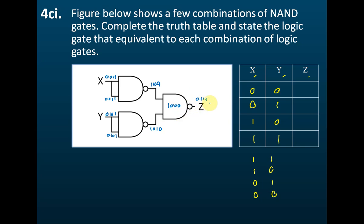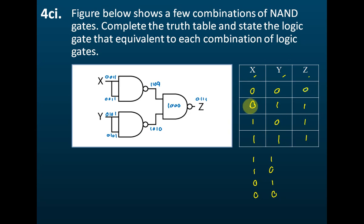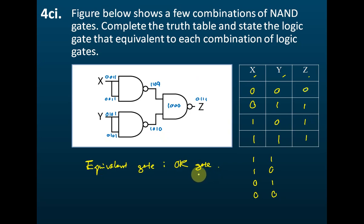So that is the output Z. The output is 0, 1, 1, 1. And from the truth table we can see that this is equivalent to an OR gate — 0 AND 0 gives 0; 0 AND 1 gives 1; 1 AND 0 gives 1; 1 AND 1 gives 1. This is the truth table for the OR gate. So the equivalent gate for this combination is the OR gate.